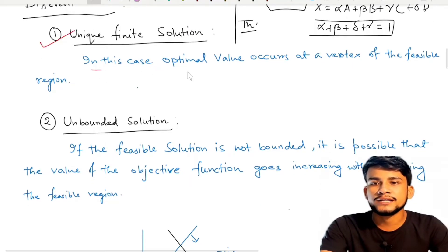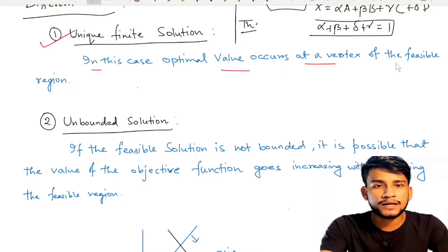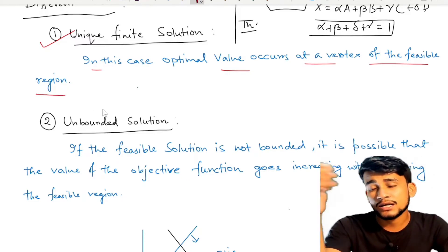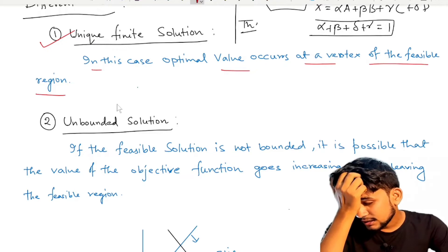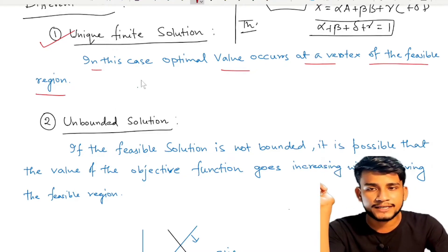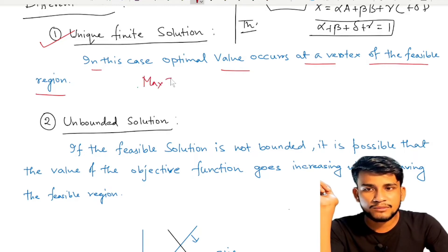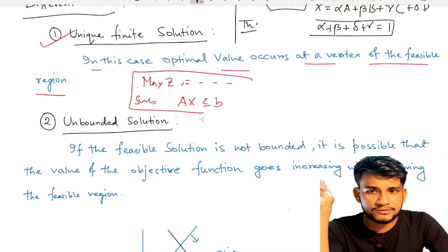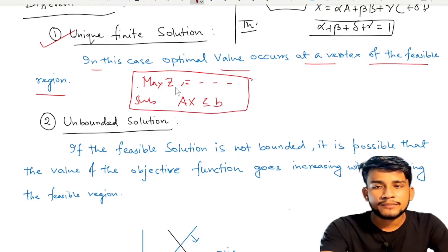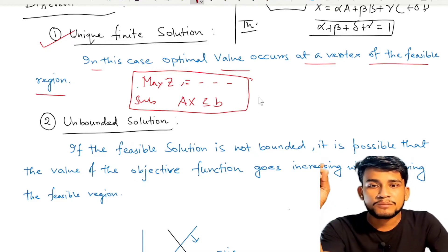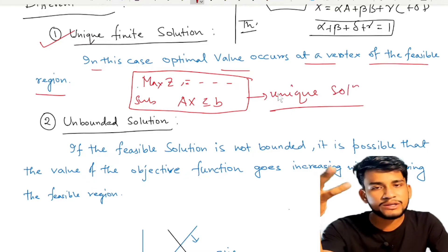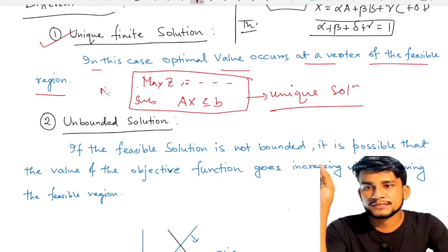Case 1 is unique finite solution. In this case, the optimal value occurs at a vertex of the feasible region. An important result here is that for a standard LPP — that is, maximize z subject to constraints of the ≤ type — we must get a unique finite solution.